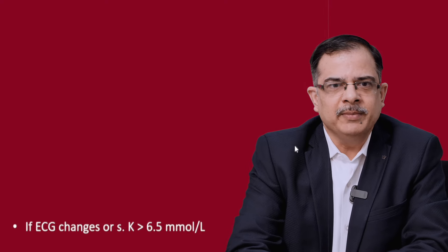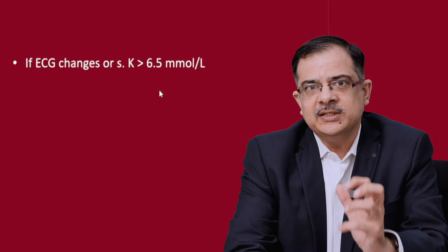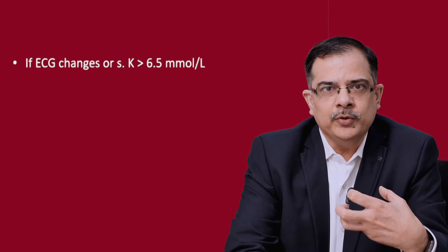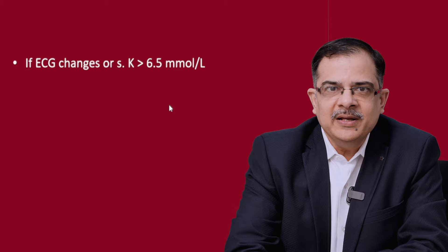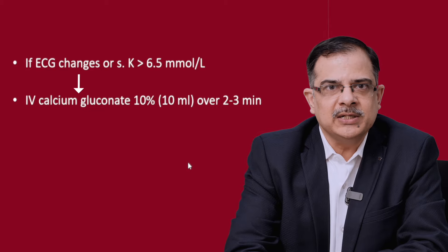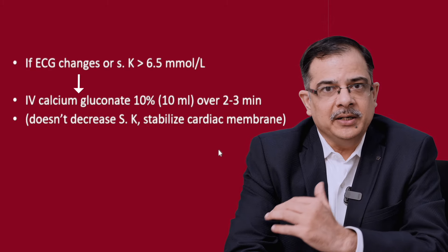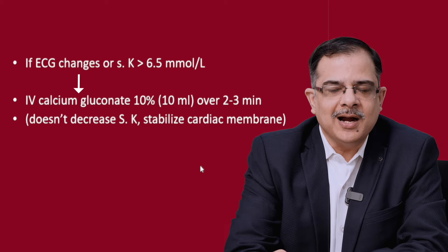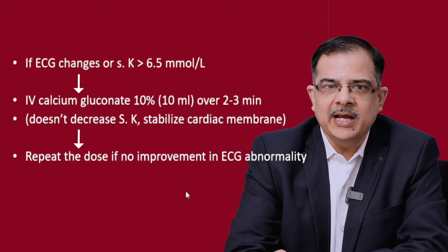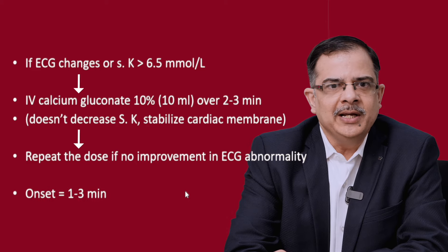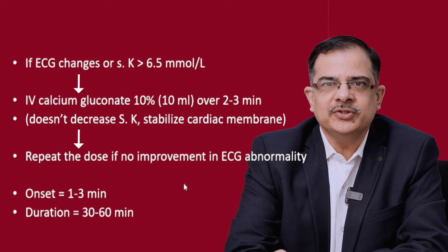If ECG changes are present or potassium is more than 6.5, this is a medical emergency. Our first aim is to stabilize the cardiac membrane so the patient does not die from arrhythmias. We give calcium gluconate 10%, 10 ml over 2 to 3 minutes. It does not decrease the potassium but stabilizes the cardiac membrane. The same dose can be repeated if there is no improvement in ECG abnormality. Onset of action is 1 to 3 minutes and duration is 30 to 60 minutes.